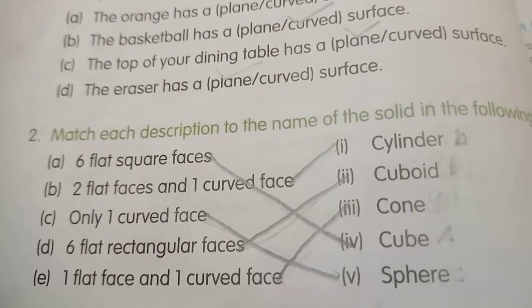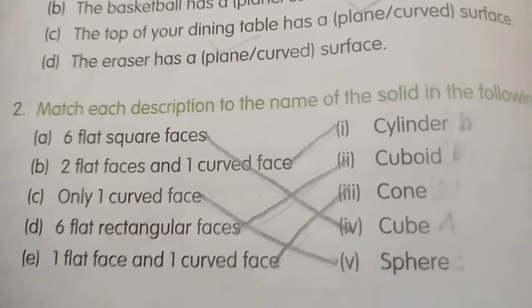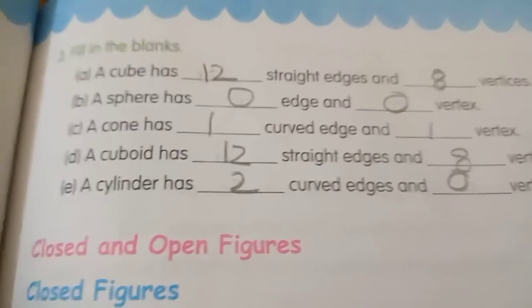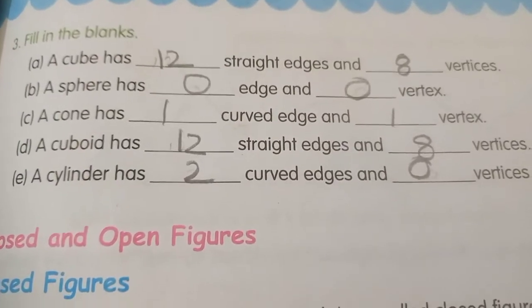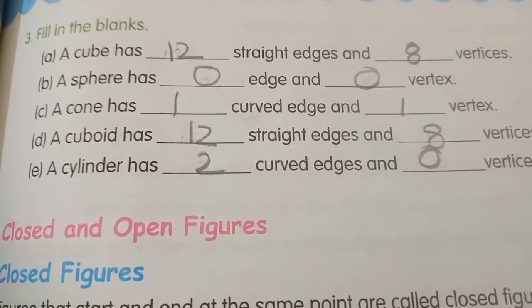Third question: fill in the blanks. A cube has 12 straight edges and 8 vertices.